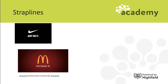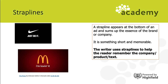Straplines are used in newspapers, magazines, and advertisements. Examples that might be familiar are Nike's 'Just Do It' and McDonald's 'I'm Loving It.' You might have heard the word 'slogan' - straplines are essentially the written form of a slogan. They sum up what the company or brand is about, are usually really short and memorable, and help the reader remember the company, product, or text.